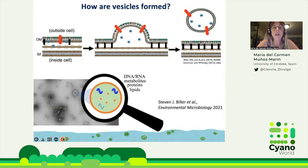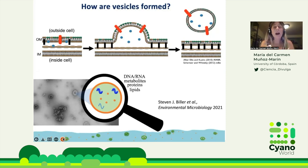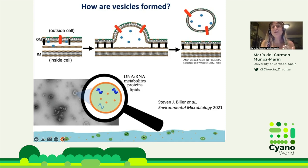But how are vesicles formed? In gram-negative bacteria, there are two main routes: one is the explosive cell lysis, and the other is blebbing out the membrane from the cells. It still remains unknown how nucleic acids end up inside vesicles, because when vesicles are formed they take many components with them — DNA, RNA, metabolites, protein, lipids. If the outer membrane and inner membrane are blebbed out simultaneously, subcompartments originate from the cytosol, explaining the presence of nucleic acids inside. But if there are only outer membrane vesicles, it's not yet known how nucleic acids cross the inner membrane.